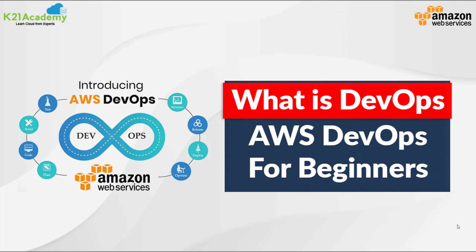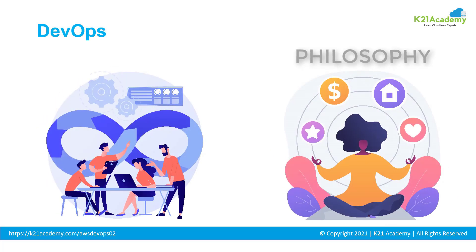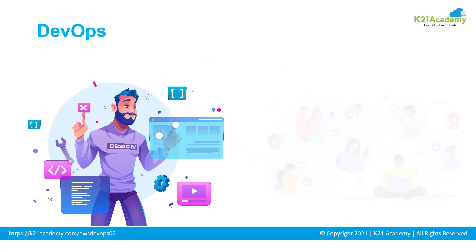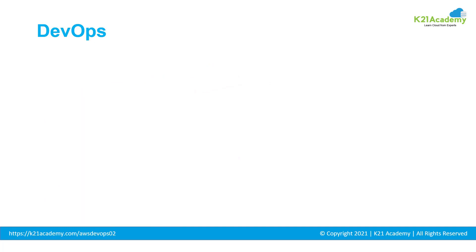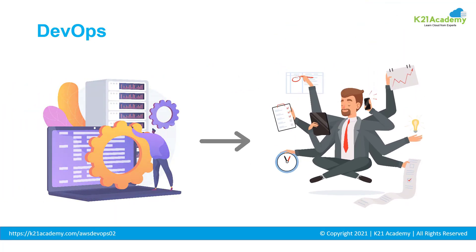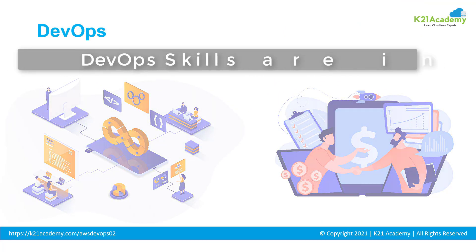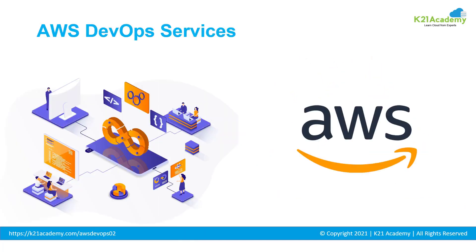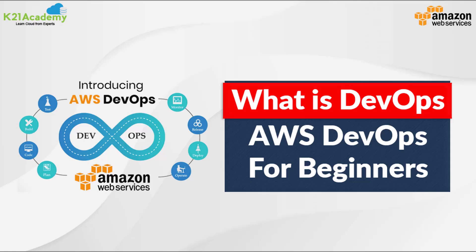Welcome to this session by K21 Academy. We are going to talk about what is DevOps and discuss the important AWS DevOps services. DevOps is a philosophy, a mindset, or the way you take your product or application or website and make it available so that millions of people can use it. DevOps skills are in huge demand and DevOps professionals are among the highest paid in the IT industry.